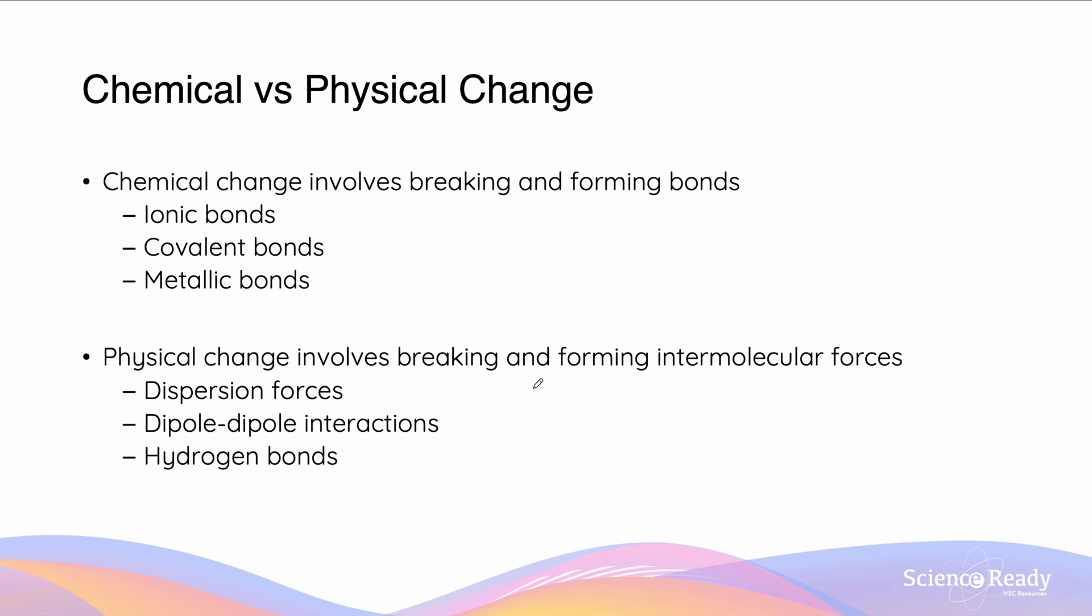As a general rule, we are able to quantify what chemical and physical changes are by understanding the chemical changes that involve the breaking and forming of bonds. In particular, intramolecular bonds for chemical change, which involve the ionic bonds, the covalent bonds, and the metallic bonds.